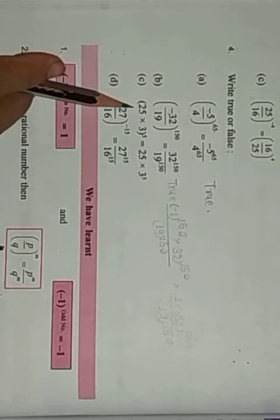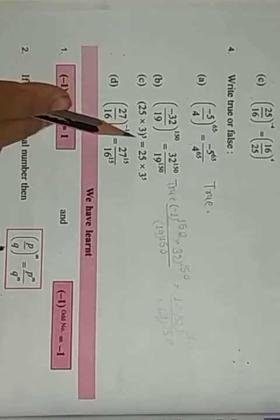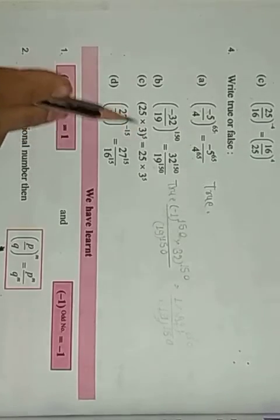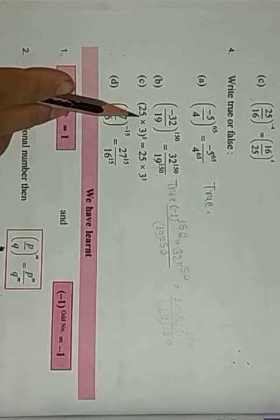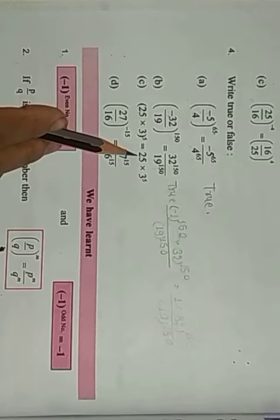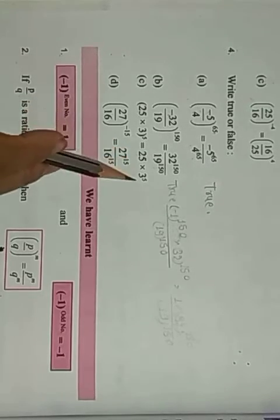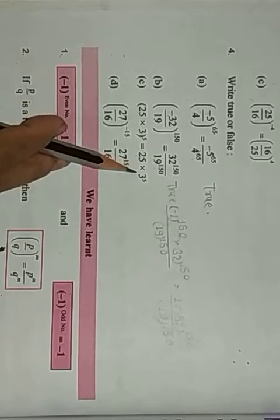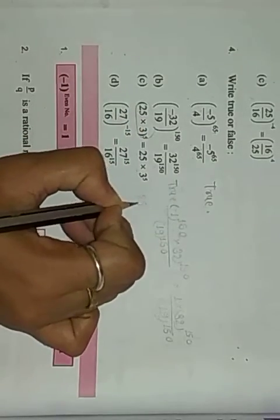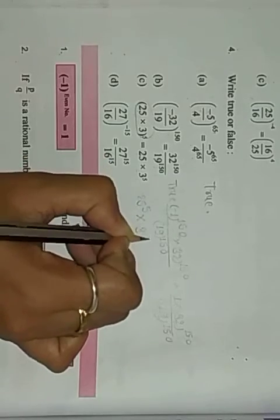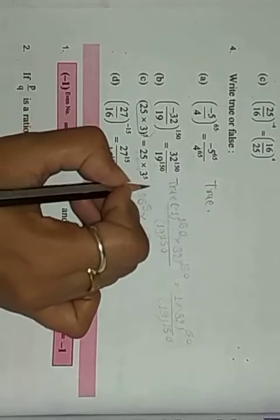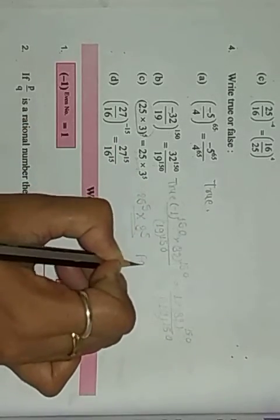Then question C: (25 × 3)^5. If we open the bracket, we get 25^5 × 3^5. But what is written is just 25 × 3^5 — only 3 has the power, not 25. So this statement is false.